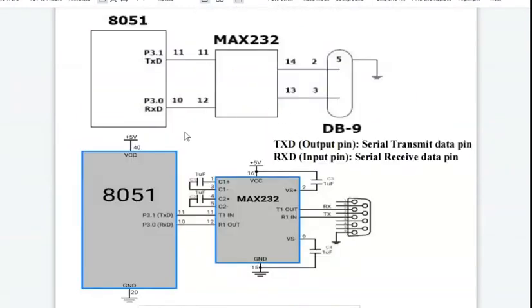This is the interfacing diagram for UART. In UART communication, we need only two pins of the controller, TXD and RXD. TXD is the output pin, Serial Transmit Data Pin, and RXD is the input pin, Serial Receive Data Pin.